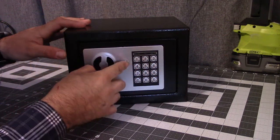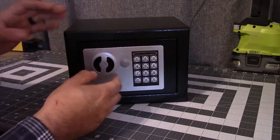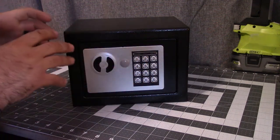If the batteries die, you have emergency keys. If you forget your code, you have emergency keys. You can reset it. You can use this anywhere you want for your valuables.